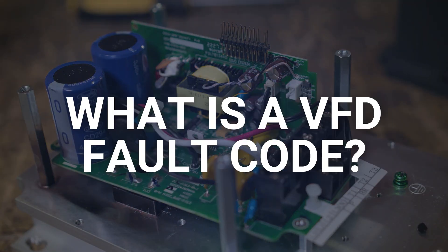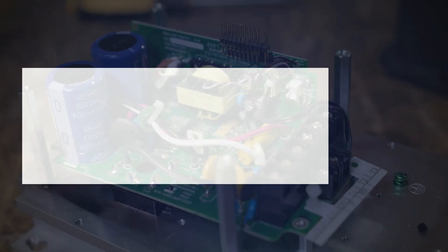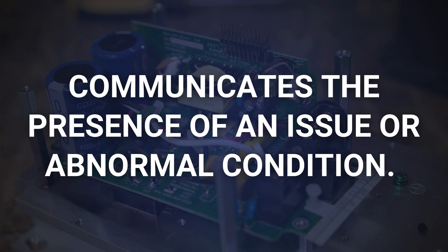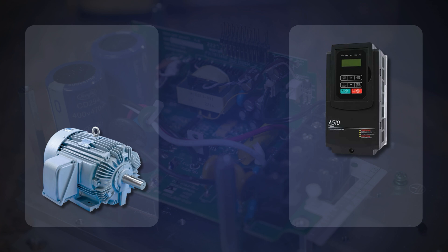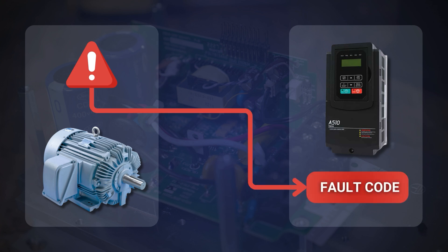So what exactly is a fault code on a VFD? A fault code on a VFD is used to communicate the presence of an issue or abnormal condition. When the VFD detects a problem in its operation or in the connected motor, it generates a fault code to help users and maintenance personnel identify the nature of the problem.